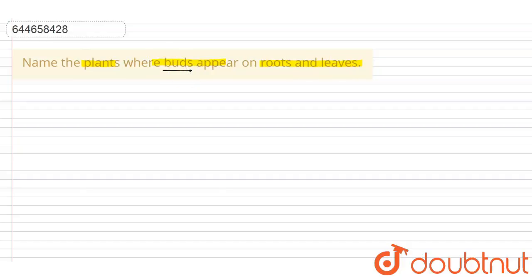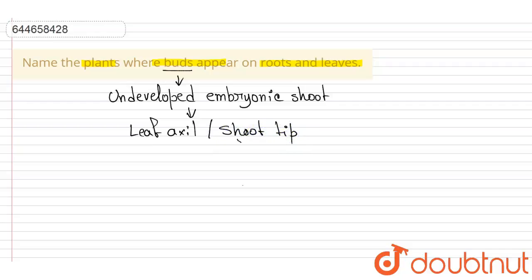and they normally occur in the axil of leaf and the tip of stem. The buds are undeveloped or embryonic shoot and they normally occur in the leaf axil or shoot tip.